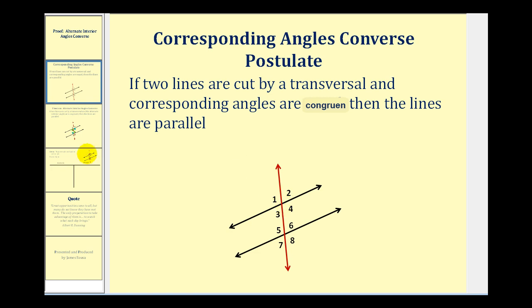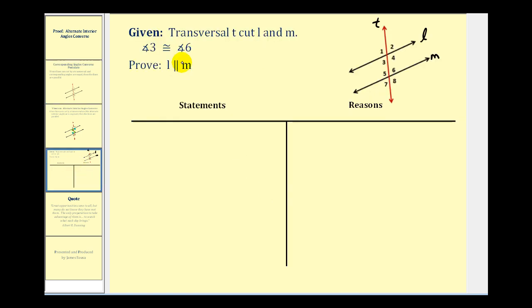Let's take a look at our proof. We're given that transversal T cuts lines L and M, and we know that angle three is congruent to angle six. So this angle here is congruent to this angle here, and those are alternate interior angles.